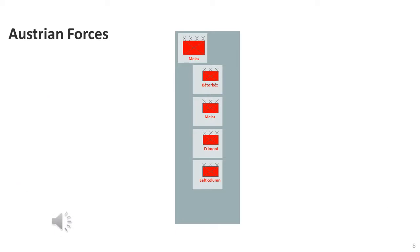This shows the Austrian corps, or columns. As I indicated before, I should really break this down to divisional level. I actually have a better idea of where Melas' divisions were located during the battle, so I may come back and redo this video at a divisional level, or at least a mixed divisional-corps level.